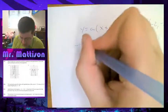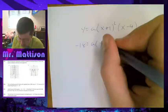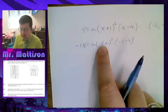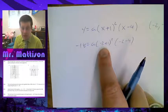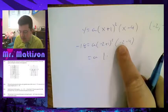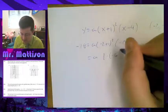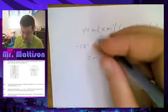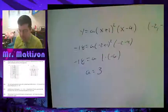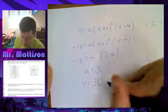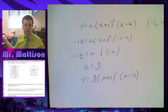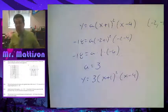So, plugging everything in, I get negative 18 equals a times negative 2 plus 1 squared times negative 2 minus 4. So, that is negative 2 plus 1 is negative 1. Negative 1 squared is just 1. So, that's a times 1 times negative 2 minus 4 is negative 6. So, 1 times negative 6 is just negative 6. And negative 18. Divide both sides by negative 6. And I get that a equals 3. So, now we get y equals 3, x plus 1 squared, x minus 4. Awesome. Works out not too bad. So, once you kind of get that, it's really, really easy.